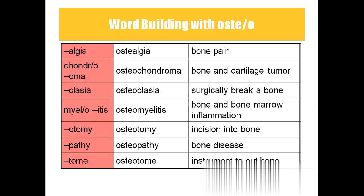Next, ostealgia means bone pain. Osteochondroma is a tumor of both bone and cartilage. Osteoclasia means surgically breaking the bone. Osteomyelitis means bone and bone marrow inflammation. Osteotomy means incision into bone. Osteopathy means bone disease. Osteotome is the instrument to cut the bone.